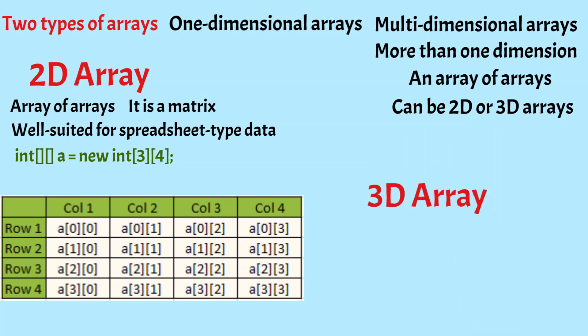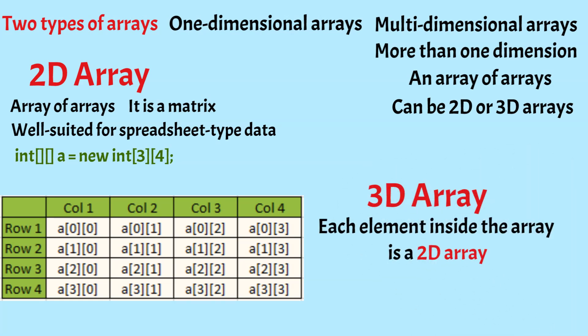A 3D array is an array where each element inside the array is a 2D array. For example, we can have a 3D array for 3 students to store marks on 4 subjects for 4 different term exams. The first dimension indicates the number of tables or arrays, the second dimension indicates the number of rows, and the third dimension indicates the number of columns.